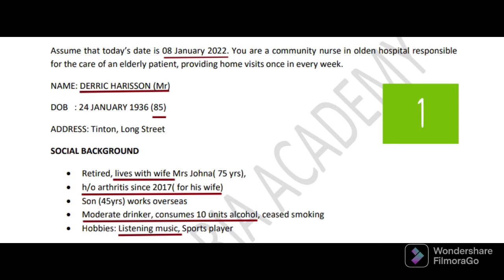Patient's name is Mr. Derek Harrison. Age is given - when you are getting both date of birth and age, prefer to write age 85 years. Underline whatever you think is important. Social background: this letter is not a non-case, so you have to take all personal and social background. He is a retired man and lives with his wife.